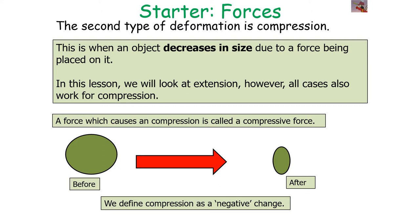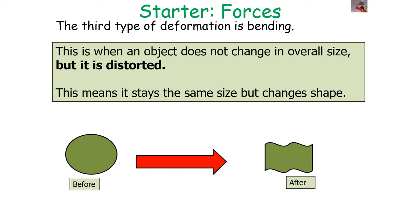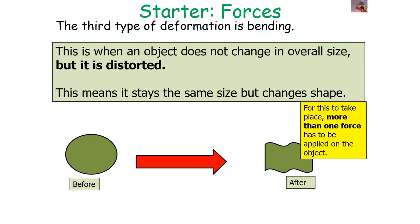A force which causes a compression is called a compressive force. We define compression as a negative change — when compression is applied to an object, it decreases in size, and more than one force has to be applied. The third type of deformation is bending. This is when an object doesn't change overall size but is distorted — it can stay the same size but change shape. Once again, more than one force has to be applied to the object.